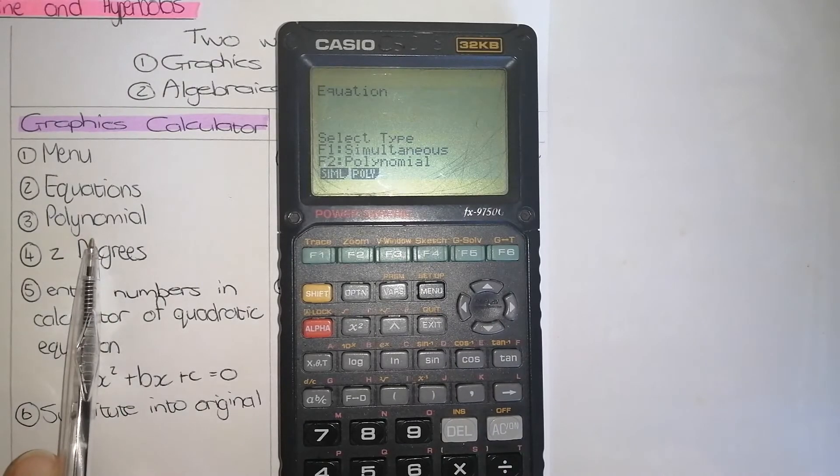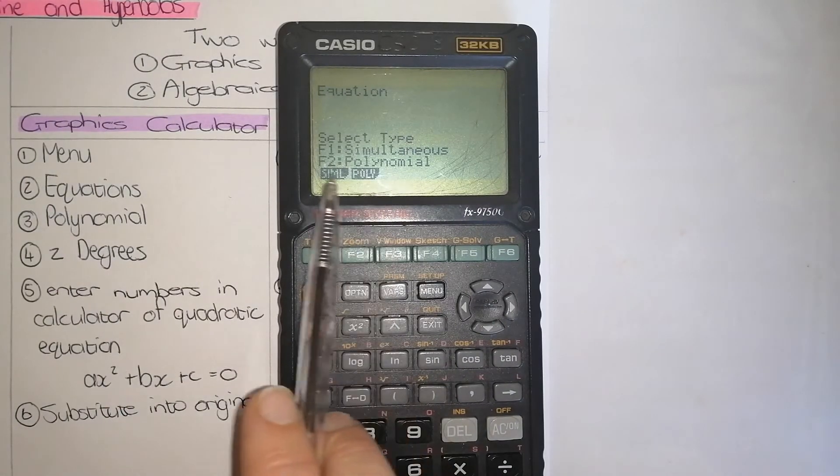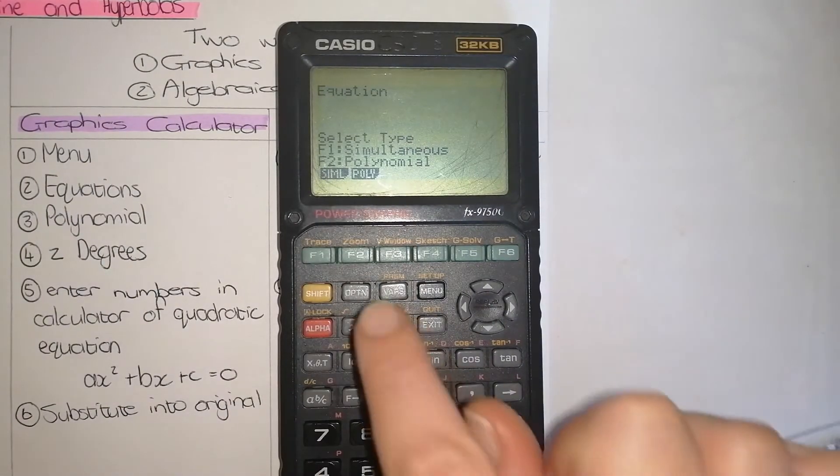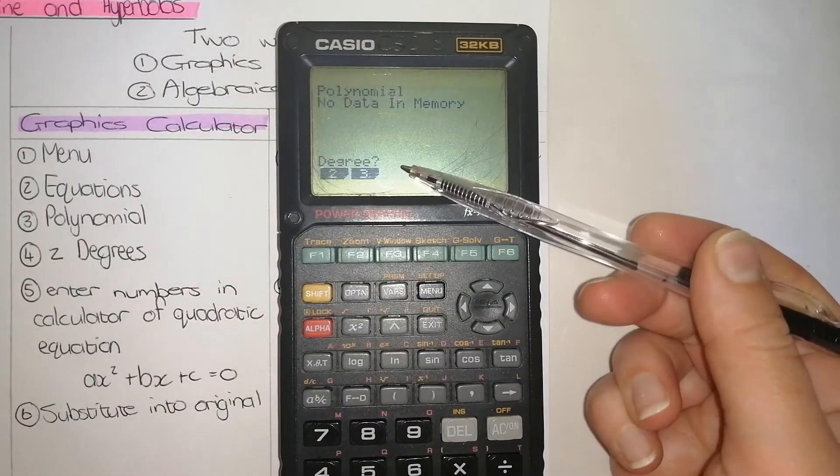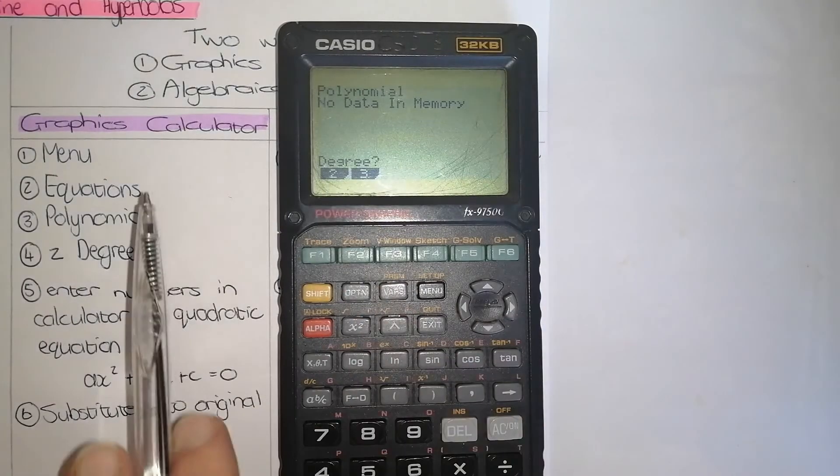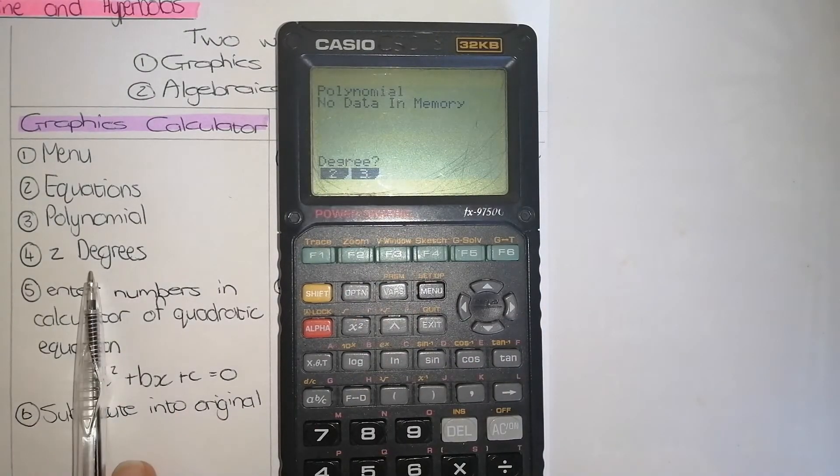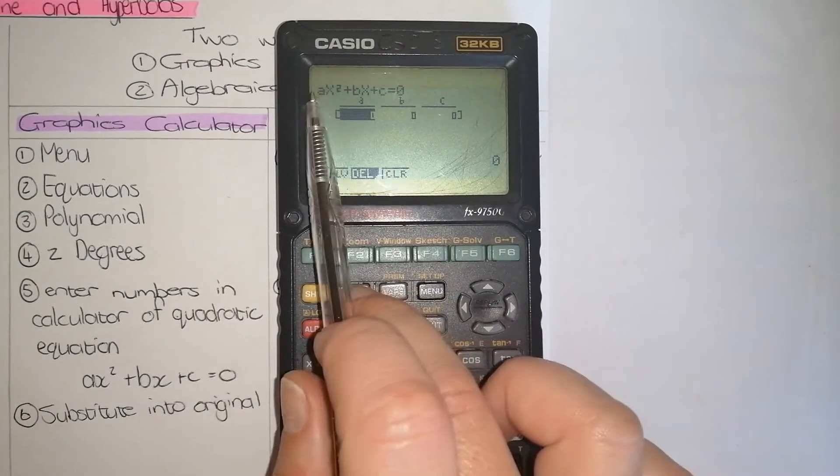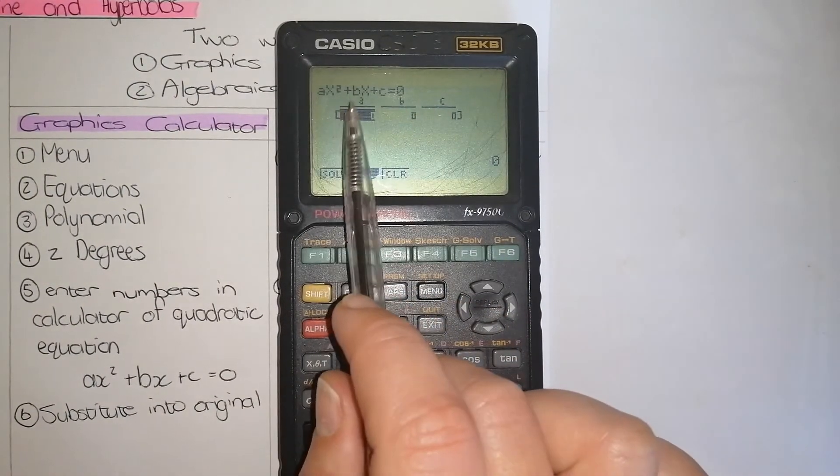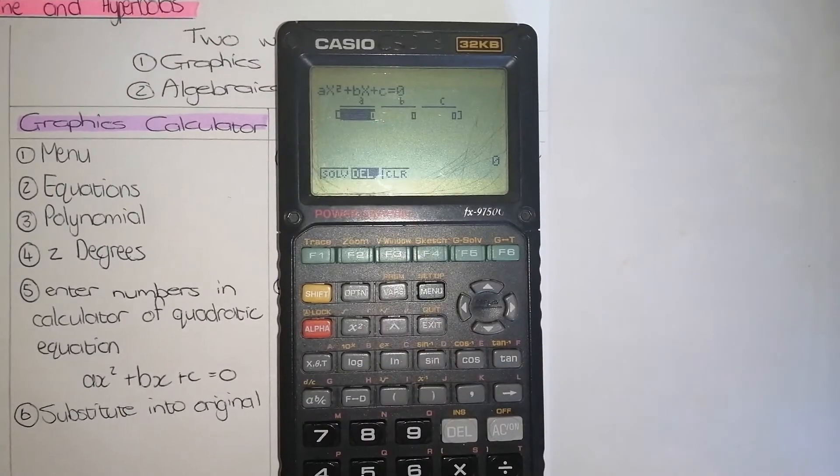Step number three is go to polynomial. On this calculator, it will be F2. So I'm going to press F2. Then it asks you how many degrees you want, how many unknowns. Therefore, I am going to press 2 because that is what I want. In this case, it's F1. Now I have my equation written in ax squared plus bx plus c is equal to 0.